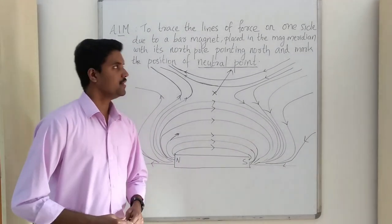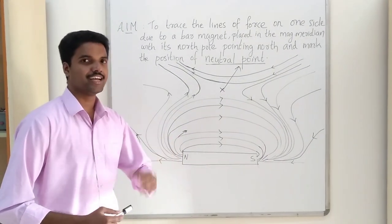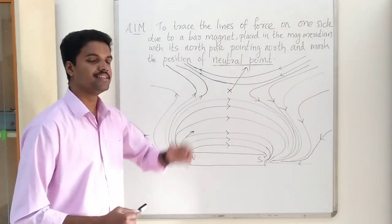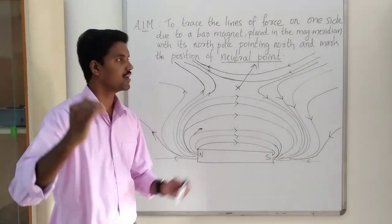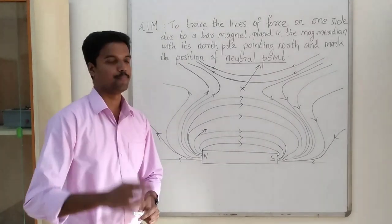Today our aim is to trace the lines of force on one side of a bar magnet placed in the magnetic meridian with its north pole pointing towards the north and mark the position of its neutral point.